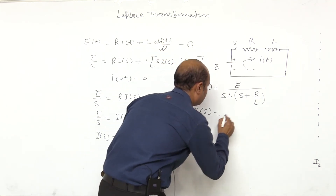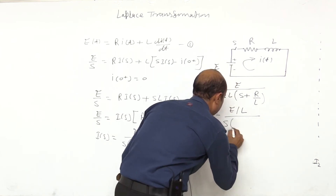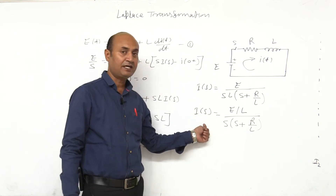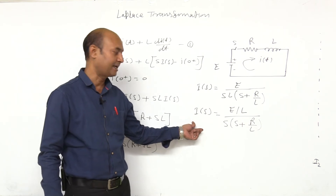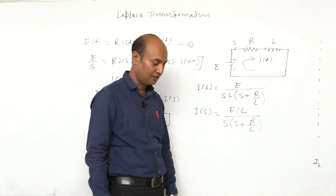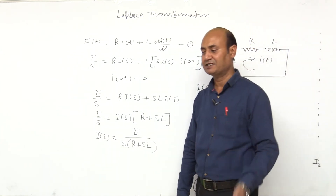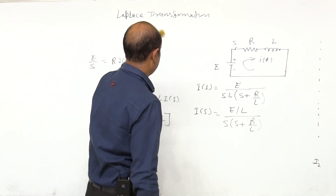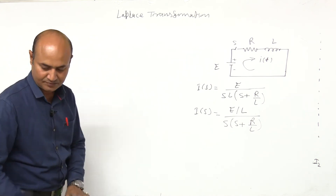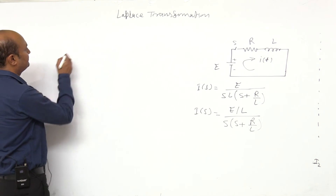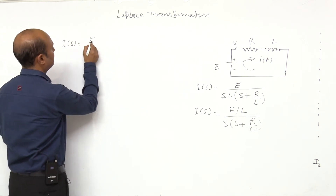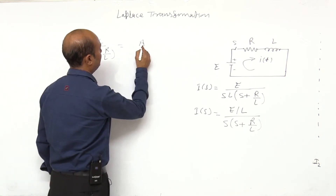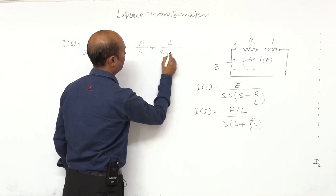Now, I(s) = E / [s·(R + sL)]. Simplifying: I(s) = (E/L) / [s·(s + R/L)]. This is our solution in S-domain. Now the current in the circuit will flow, but in the S-domain. To get the T-domain answer, we apply inverse Laplace. So I(s) = (E/L) / [s·(s + R/L)] will be expanded by partial fractions: A/s + B/(s + R/L).